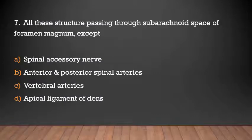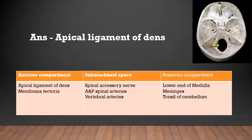All these structures pass through the subarachnoid space of the foramen magnum except: spinal accessory nerve, anterior and posterior spinal arteries, vertebral arteries, or apical ligament of dens? The answer is apical ligament of dens — it does not pass through the subarachnoid space of the foramen magnum.